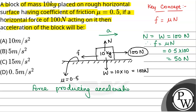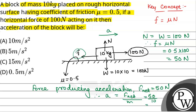The net force producing acceleration, F net, will be equal to 100 minus 50, that is 50 N. Therefore, acceleration will be equal to F net divided by mass of block, that is 50 by 10, which equals 5 meter per second square. So, the acceleration of the block will be 5 meter per second square.